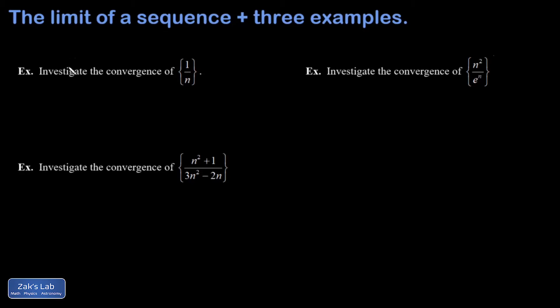Let's check out the limits of a few sequences. In the first example, we're asked to investigate the convergence of the sequence 1/n. I look at the limit as n goes to infinity of 1/n. If I plug in infinity for n, I have 1 divided by infinity, which is unambiguously zero. So the limit of this sequence equals zero and it converges. Another way to say it is 1/n converges to zero.